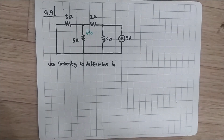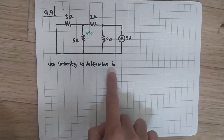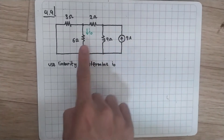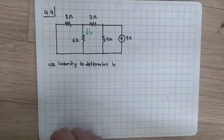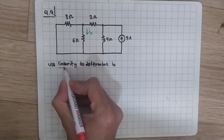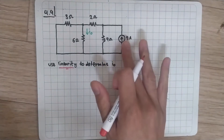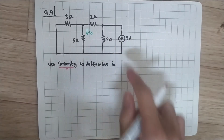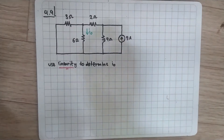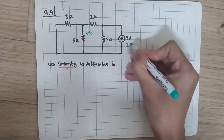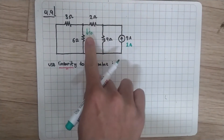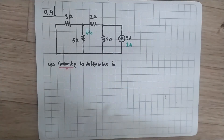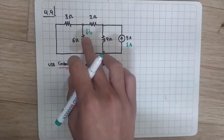We are going to solve problem 4.4 from Sadiku's book. The question is to use linearity to determine I0, which is the current passing through the six ohm resistor. You could find this easily by doing KCL or KVL, but we are asked to use linearity. We assume the current source is 1 ampere, find I0 for that case, and then multiply by 9 since 9 ampere is 9 times 1 ampere.